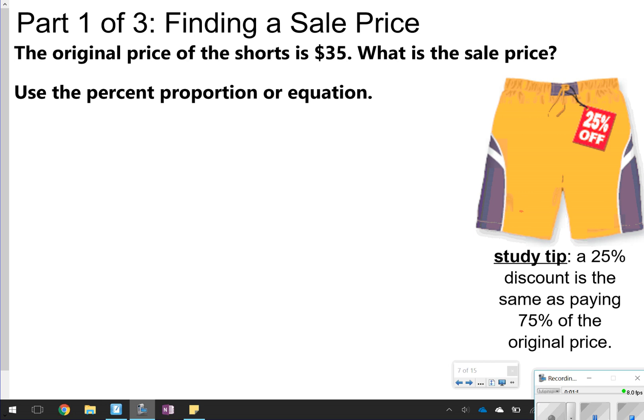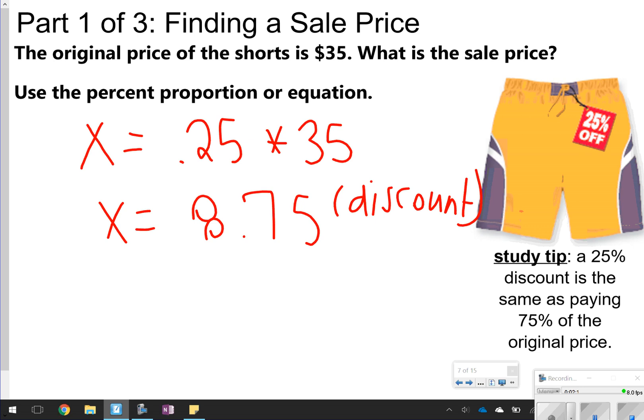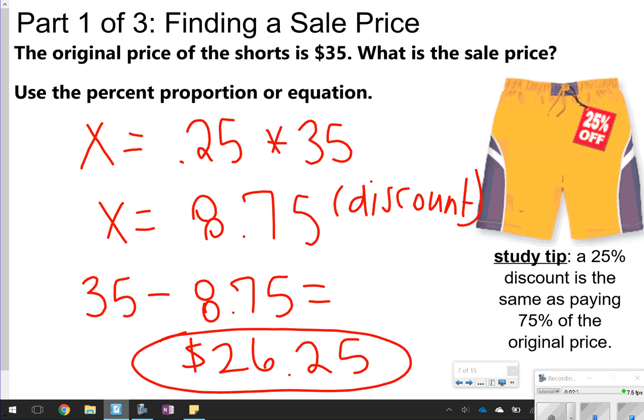The other way you can do it is through the percent equation. We know that we're missing the is, so we're solving for is. So x is equal to 0.25 times 35, which is the of. This might be a little bit easier, because when you do 0.25 times 35, you get your $8.75. This is called your discount. So what you'd have to do to find your sale price is just take your total price and subtract $8.75 from it, and that still gives you the $26.25. But you might see that it's easier to find the sale price using this way, because it doesn't take a lot of work to do on your paper or the calculator.